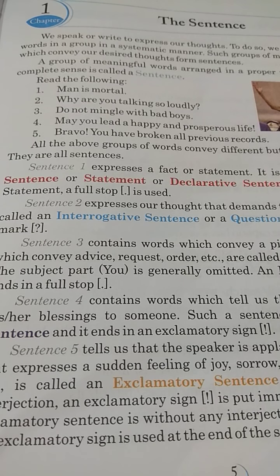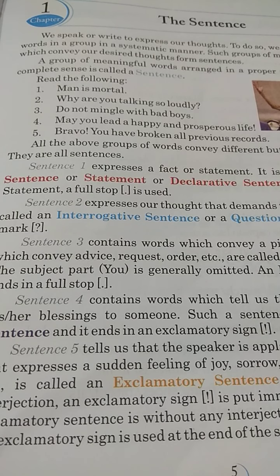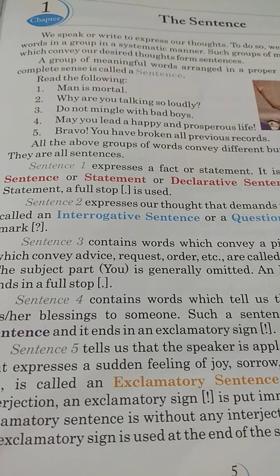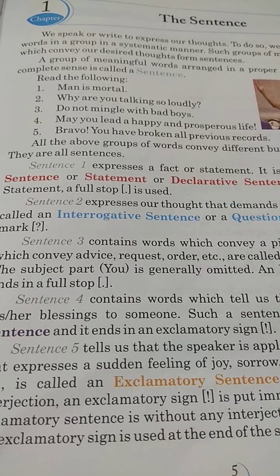To do so, we use meaningful words in a group, in a systematic manner. Such groups of meaningful words which convey our desired thoughts form sentences. A group of meaningful words arranged in a proper way to express a complete sense is called a sentence. Every word we use has a specific meaning, but only a word does not convey the complete meaning, and even a group of words not placed in a proper order cannot express a complete meaning.